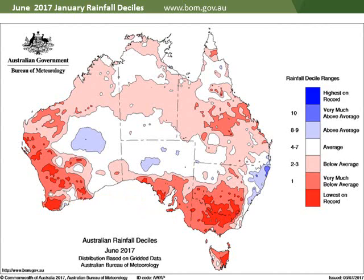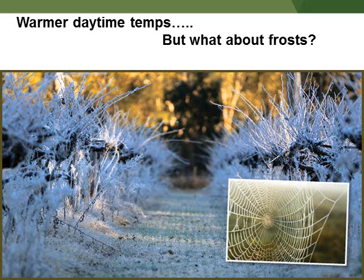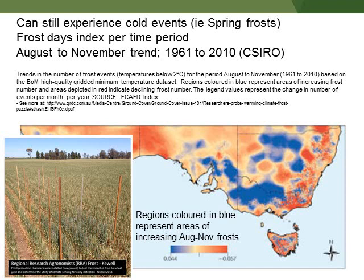When we get high pressure, it tends to not be helpful for rainfall, squeezing more weather to our south. High pressure can also bring warmer daytime temperatures, encouraging vines to fire up earlier. But with really clear night skies and dry air, high pressure is conducive to frosts — which we've noticed this year too. While daytime temperatures have been going up, the incidence of spring frosts in the August–November period is just as bad as it was in some areas, or even getting a bit worse due to that rising pressure pattern.